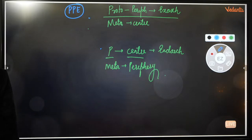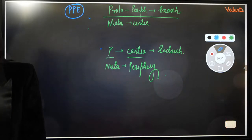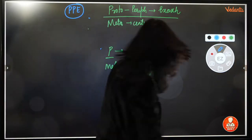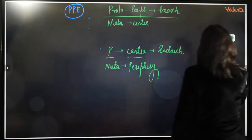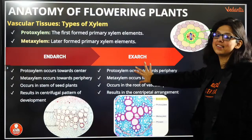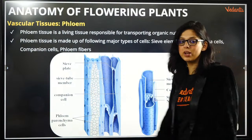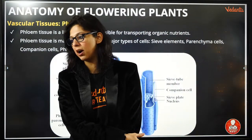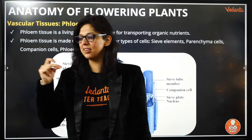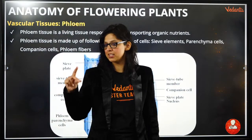Just remember PPE: proto-xylem towards the periphery is exarch — then everything is easy peasy lemon squeezy. Next, 10 more minutes and then we move on to our super amazing Mentimeter quiz. Phloem tissue is a living tissue.